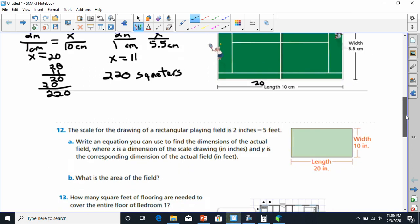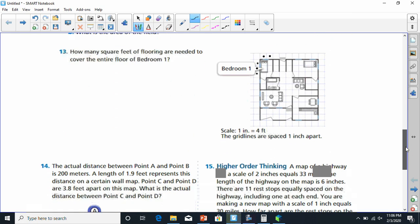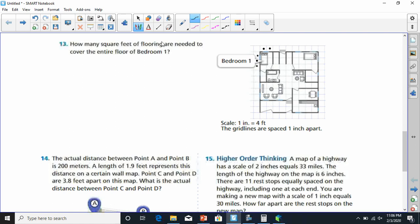Next, I'm going to be doing number 13. How many square feet of flooring are needed to cover the entire floor in bedroom 1? If I go to bedroom 1, I see that bedroom 1 is pretty small. It's got 1, 2 by 1, 2, 3 as far as these little blocks. It says 1 inch equals 4 feet, and all the grid lines are spaced with 1 inch apart. So, every one of these little grid lines is really 4 feet.